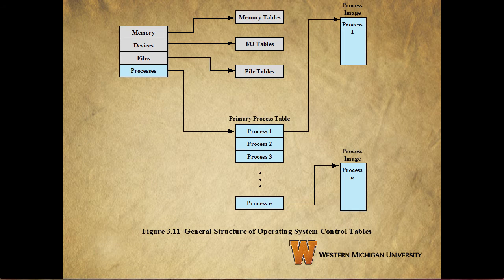Since the OS needs to manage processes and resources, it has to have information about the current status of each process and resource. The universal approach is straightforward: the operating system constructs and maintains tables of information about each entity it's managing. This can be shown in the figure here, which shows four different types of tables maintained by the operating system — the memory, IO, file, and process tables.